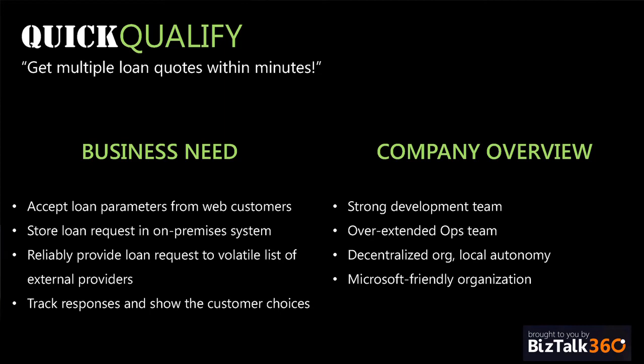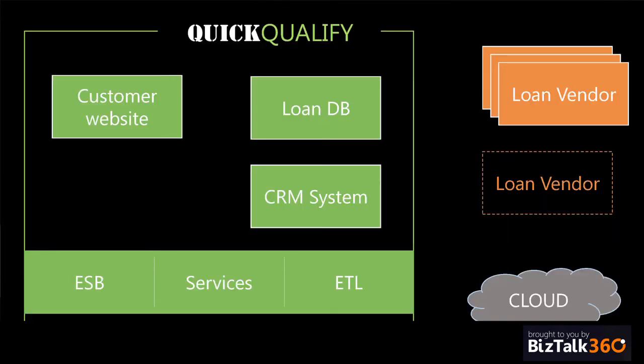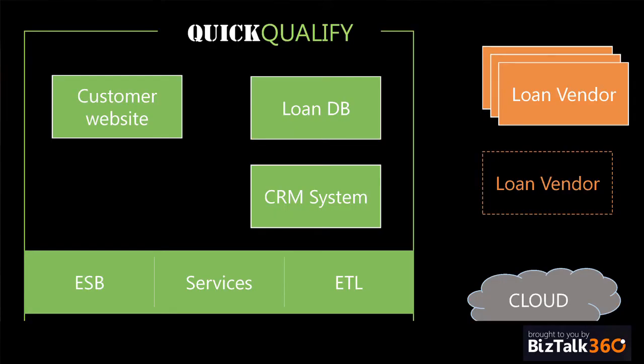If you look at this company: they have a strong development team, they like to build their stuff. Their ops team is a bit overwhelmed. The organization is decentralized — a lot of different departments can do whatever they want. And they're a Microsoft-friendly org; they pay a lot of money every year in software assurance. So if I assume that scenario with this kind of integration need — a customer website, a database on-premises, a service bus, a service framework, ETL, some named vendors plus future ones — what technology set might you use to solve this?